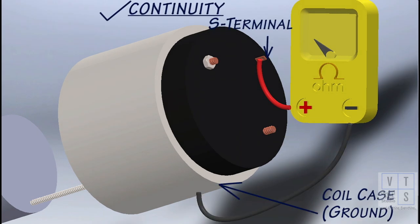Check for continuity across magnetic switch S terminal and coil case. If no continuity exists, hold-in coil is open and should be replaced.